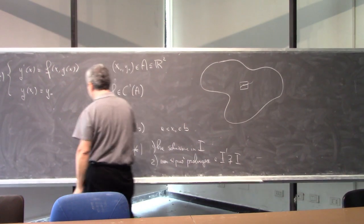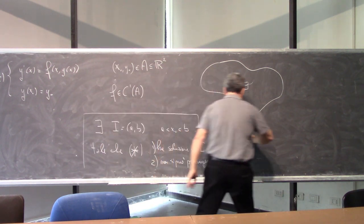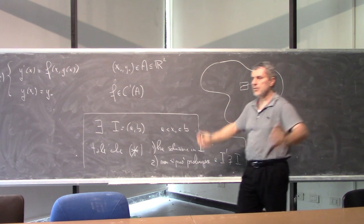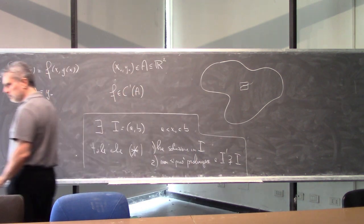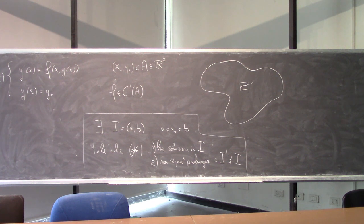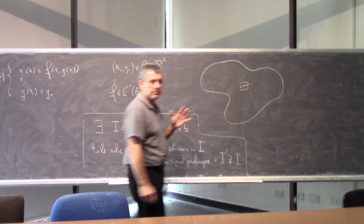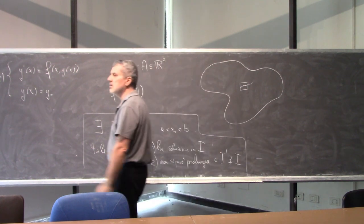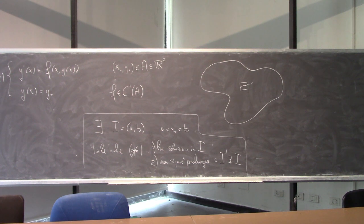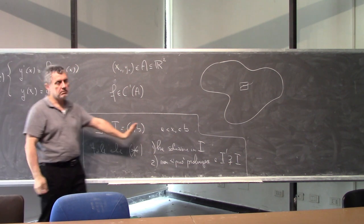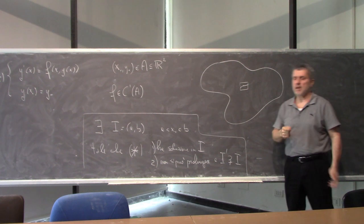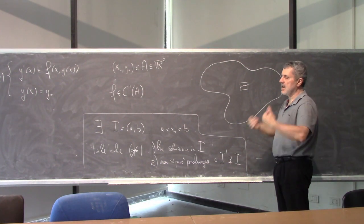Quindi questo è il primo fatto: esistenza di una soluzione massimale, che risolve lo stesso problema di Cauchy, ma l'intervallo su cui risolve il problema è il più grande possibile. Poi uno vorrebbe capire anche cosa succede, quando è che la soluzione a un certo punto non esiste più. Perché può sparire una soluzione? Arrivo a B e in B la soluzione non è definita più. Ci sono due casi possibili.